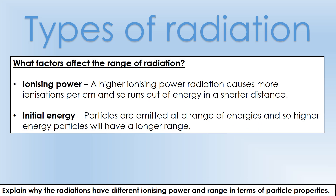Two factors affect the range of radiation: ionizing power - the higher the ionizing power the shorter the range because you lose energy more quickly - and initial energy. Not every alpha particle is emitted with identical energy; those emitted with more energy can travel further through material before losing all their energy.